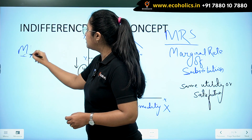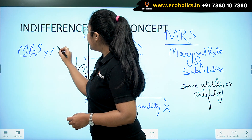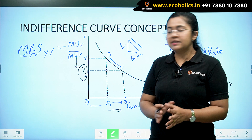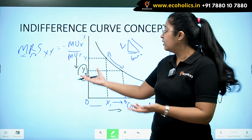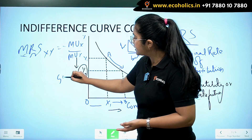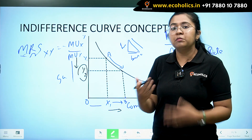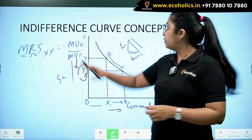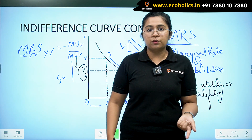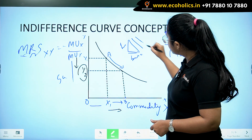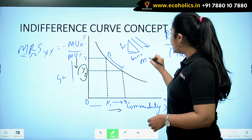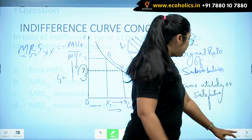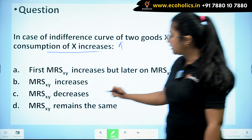We can write this as: MRS of XY equals MUx divided by MUy. Simply put, we are substituting more of X for Y — we are giving up, or sacrificing, Y in exchange for more X. Concluding: when commodity X is consumed more, the marginal rate of substitution XY is diminishing or decreasing. The slope is diminishing, so the correct answer is that MRS of XY decreases.